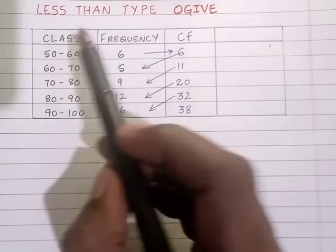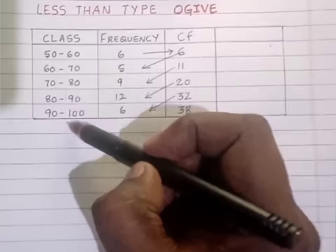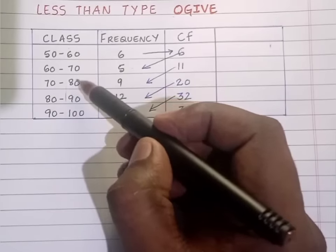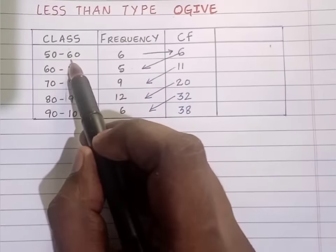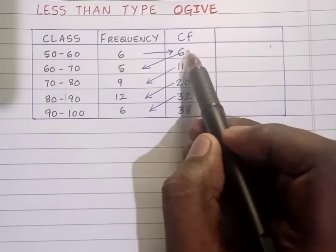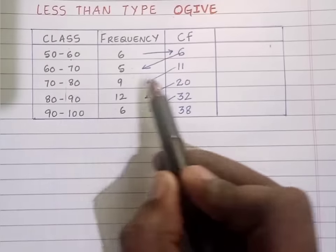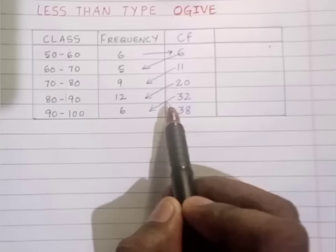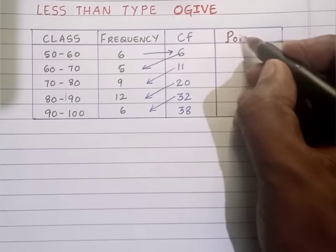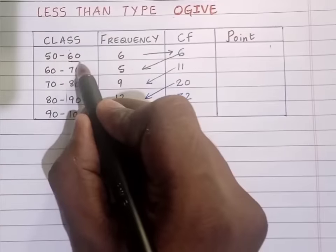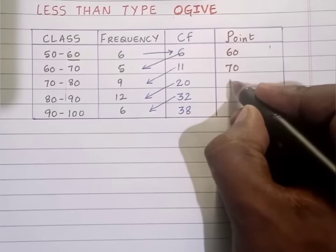For the less than type OJAL, I should consider upper limits, which are plotted against cumulative frequency. For 70, it is 11. For 80, it is 20. For 90, it is 32. For 100, it is 38. So for less than OJAL, the upper limit is plotted against cumulative frequency.